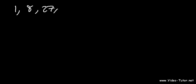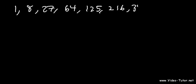1 to the 3rd is 1. 2 to the 3rd is 8 (2 times 2 times 2). 3 cubed, or 3 times 3 times 3, is 27. 4 to the 3rd power is 64. 5 cubed is 125. 6 cubed is 216. 7 cubed is 343. 8 cubed is 512. 9 cubed is 729. And 10 to the 3rd is 1000 (10 times 10 times 10).